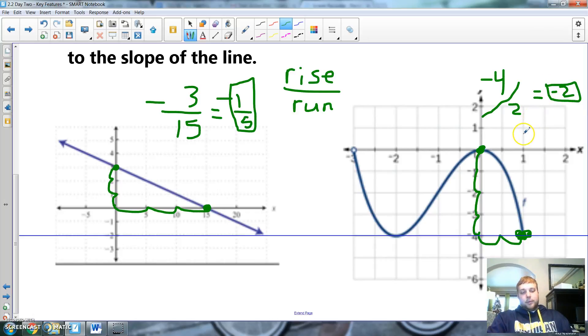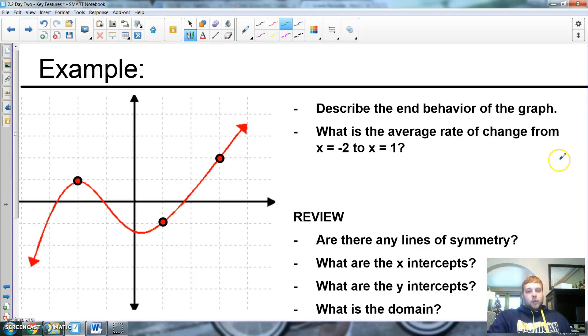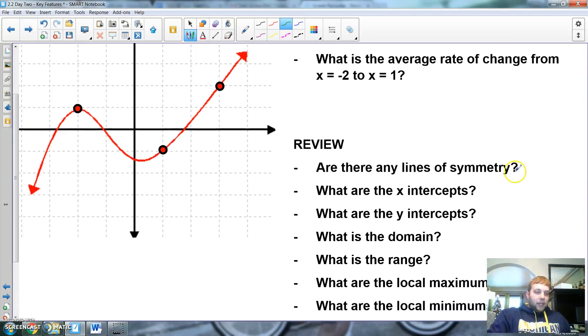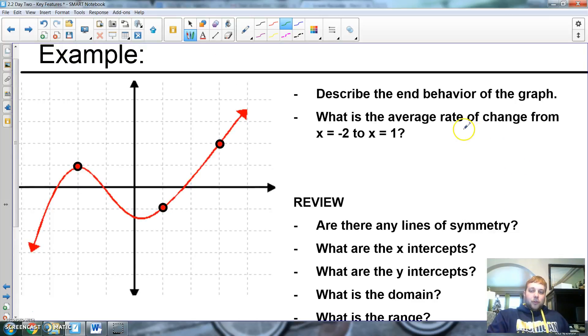There we go. Easy, right? Easy, killer. So, here we go. Here's an example for you guys. Describe the end behavior of the graph. So, the left one on the left. What's happening on the left?